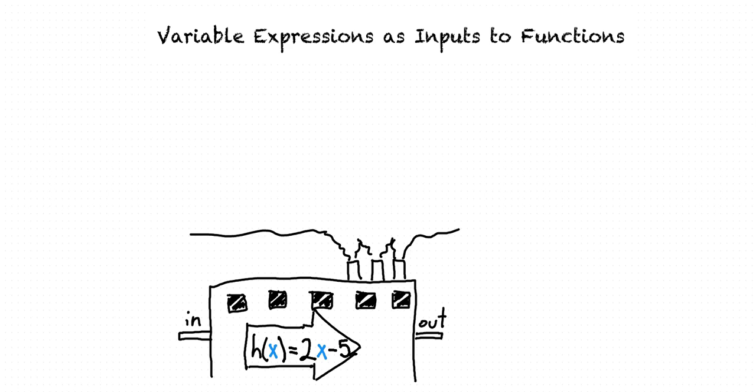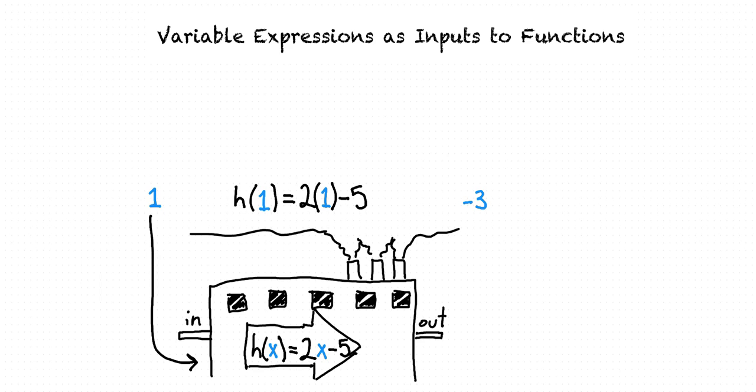If we have some input, such as 1, that enters our factory, we could write that as h(1), and then we perform our function on it, which in this case is multiplying by 2 and subtracting 5, which gives us 2 times 1 minus 5. When we simplify this, we're left with an output of negative 3.